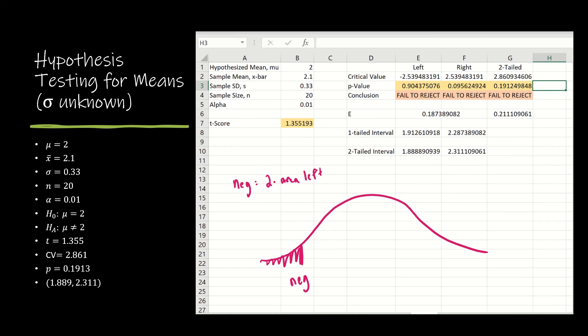However, if it were positive, I would have to find the area to the right and take it times two. So if it were positive, I'm going to take two times the area to the right.